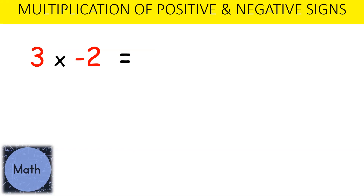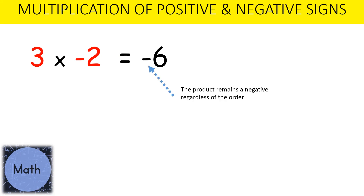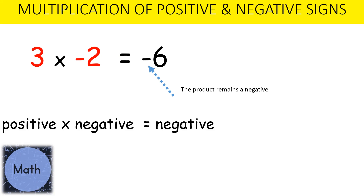In this example we have positive 3 multiplied by negative 2. The signs are different, so therefore the answer will be negative 6. The product remains negative regardless of the order, so a positive multiplied by a negative is a negative.